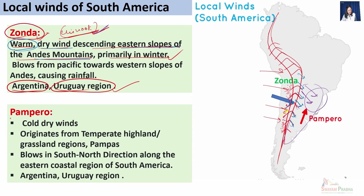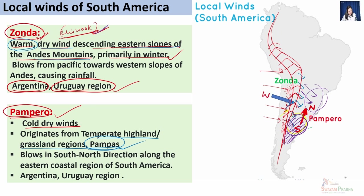The second important wind of South America is Pampero. Contrary to Zonda, Pampero is cold and dry. These winds originate from the temperate highland regions of South America — also the temperate grasslands called Pampas. They move northward, so their primary direction is from south to north. The main direction of Zonda was from northwest to southeast, while Pampero is from south to north. They blow along the eastern coastal regions of Argentina and Uruguay. So the two dominant local winds of South America are Zonda and Pampero.